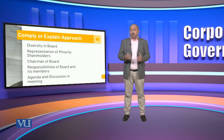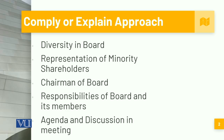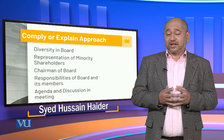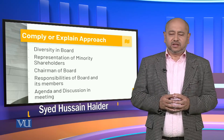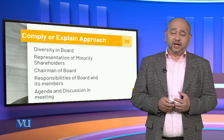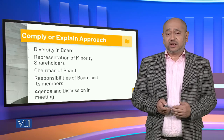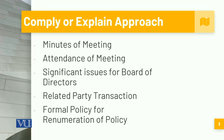The second most important part after the mandatory provisions is basically the comply or explain approach. It requires diversity in the board, and representation of minority stakeholders is also very important. The chairman of the board and the selection of the chairman are very important. Responsibilities of the board and its members, the agenda and different discussions in meetings — how they have to be conducted, how those minutes have to be developed, and how the board has to ensure compliance of corporate governance within their own company. If it is not being done, then they also have to explain why. So each meeting needs to be minuted and there has to be a proper attendance of the meeting.